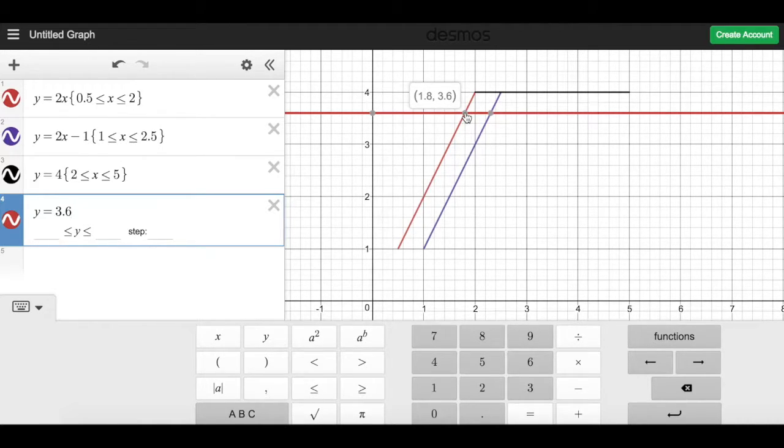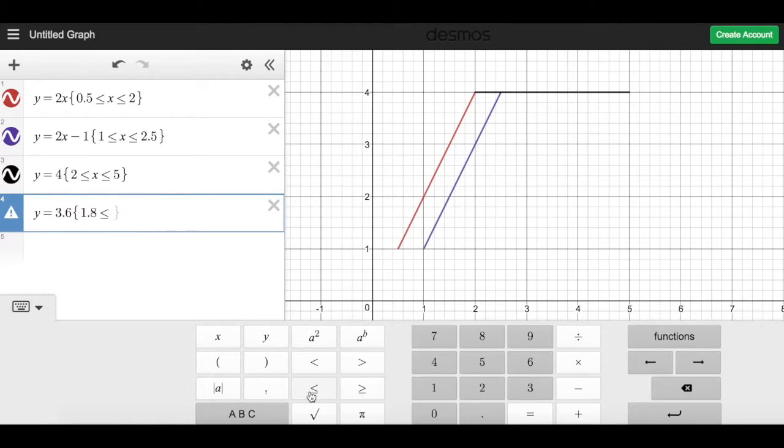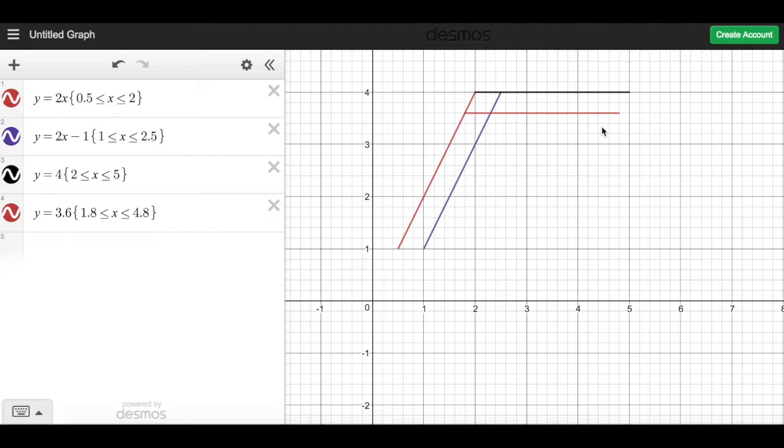But again, I want to cut this line off so that it doesn't continue indefinitely. And this Desmos program is actually telling me that these two lines intersect at 1.8. So I'm going to use 1.8 as my lower end of my boundary, and I'll make this thing go to 4.8. And sure enough, you can see I've created a second border for the top of my C.